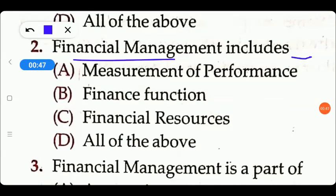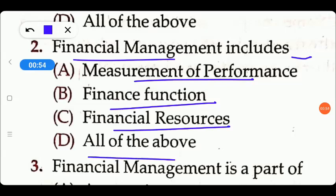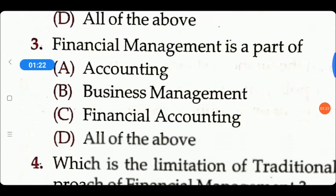The next question is about financial management — what things do we include? Options are: Measurement of Performance, Finance Function, Financial Resources, or All of the above. When we talk about financial management, we talk about performance measurement, finance function, and how to manage them. Option D will be the right answer.